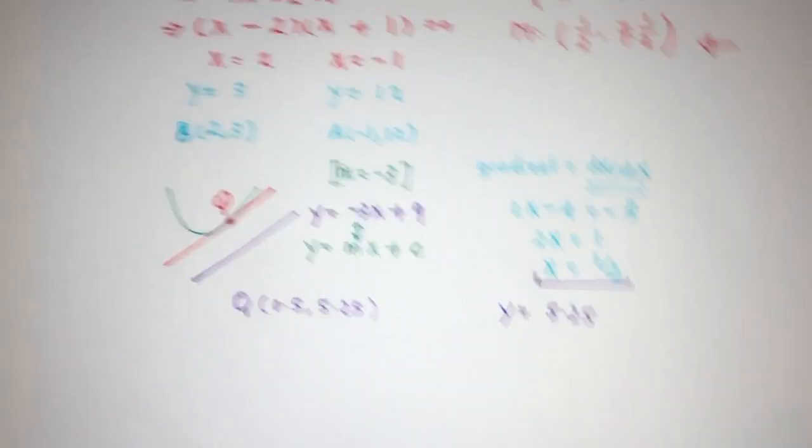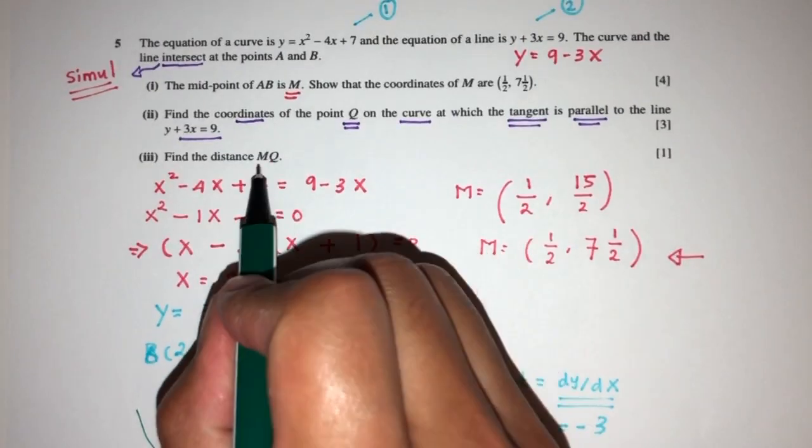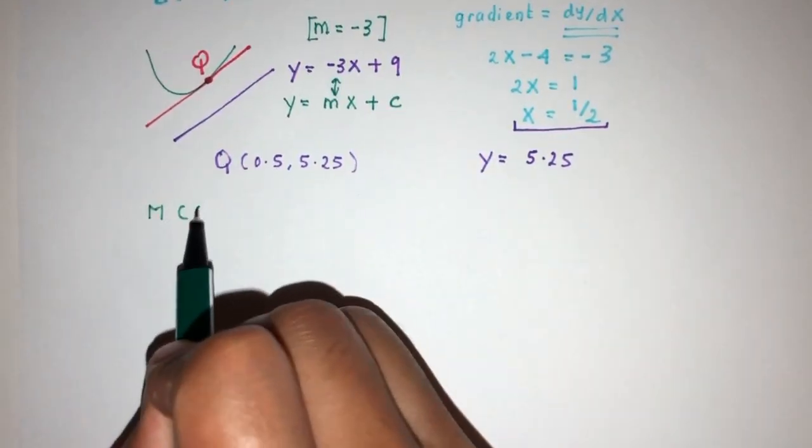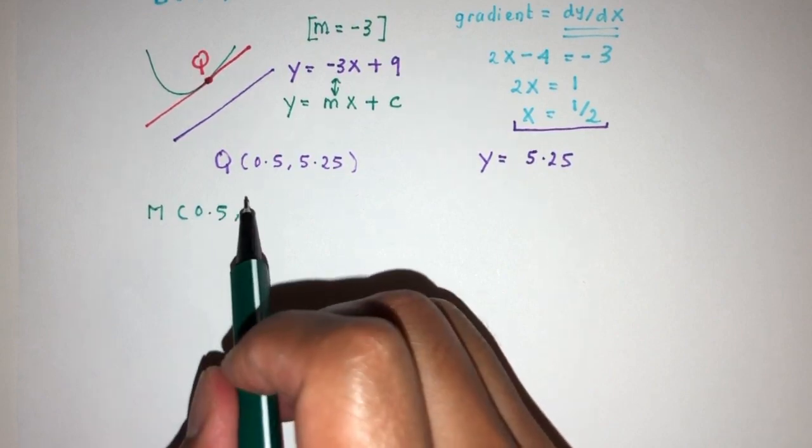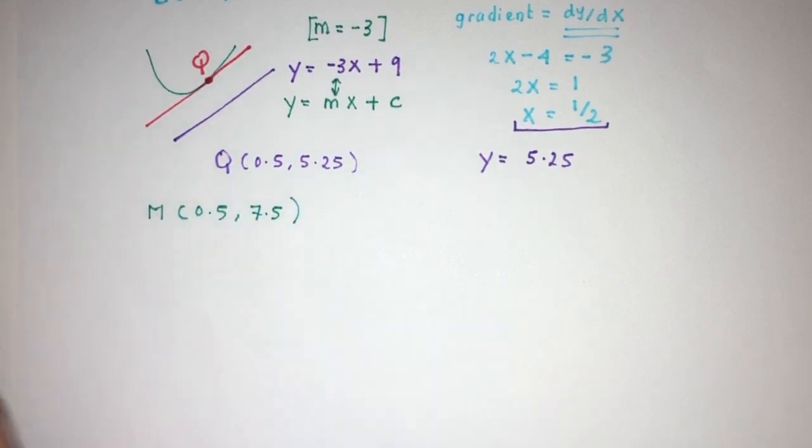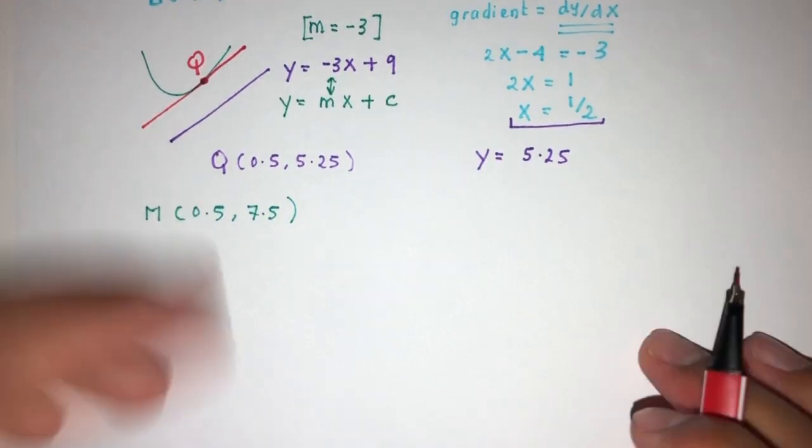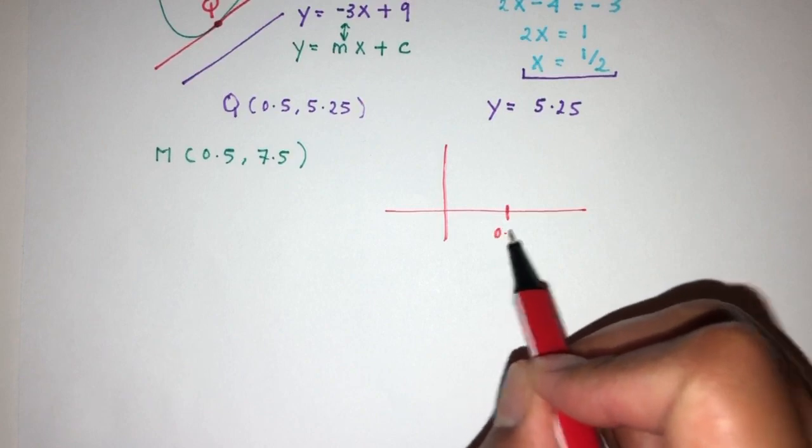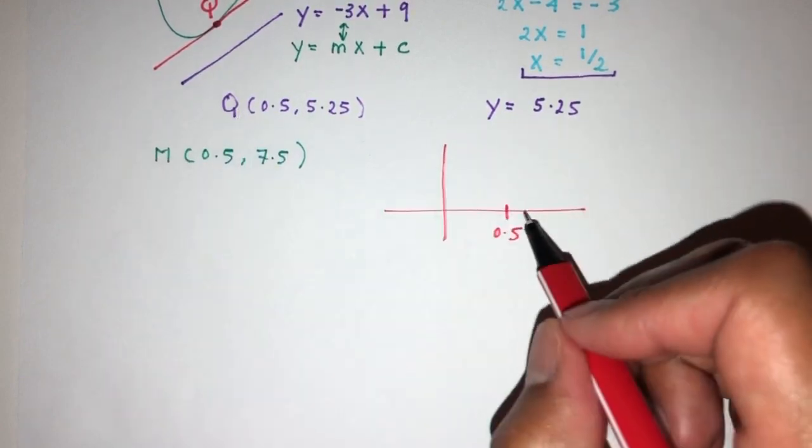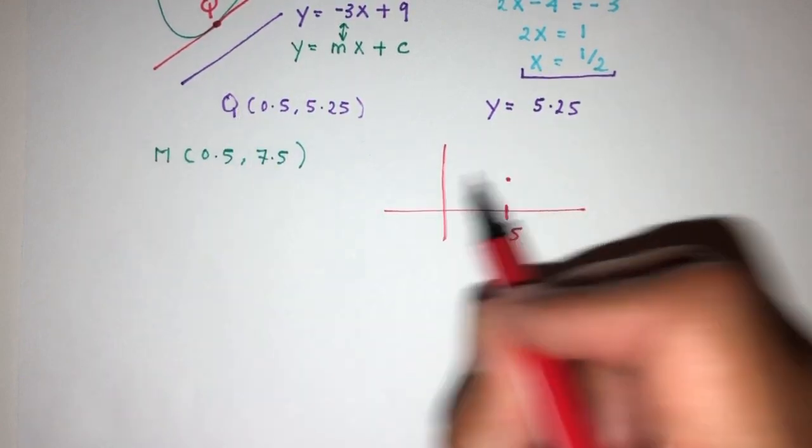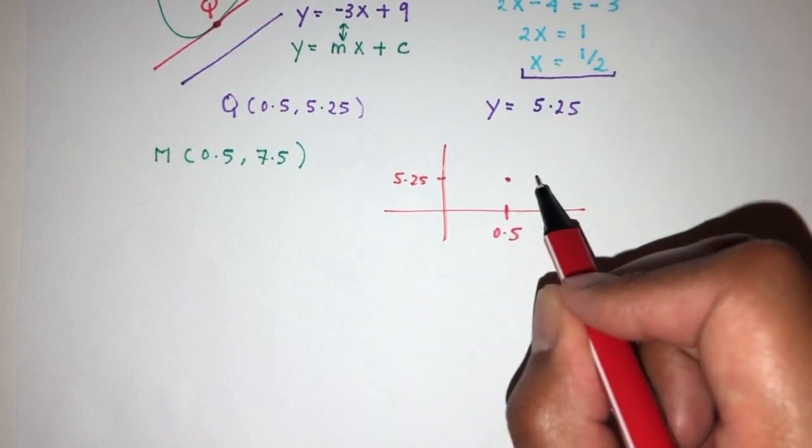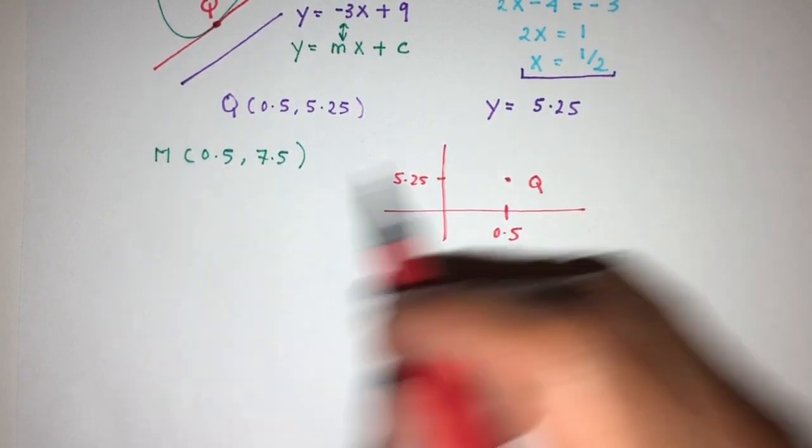Now for part 3, we have to find the distance MQ. Pretty easy. Since we know M is (0.5, 7.5), you can do this by observation. For example, 0.5 is here, the first point is (0.5, 5.25) will be somewhere here. This is point Q. Here M will have 0.5 again, same x value.